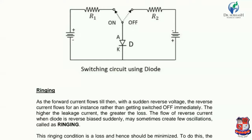This ringing condition is a loss and hence should be minimized. It is a type of impurity in the circuit, and the oscillations appearing in the waveform should be reduced as much as possible. To do this, the switching times of the diode must be understood.